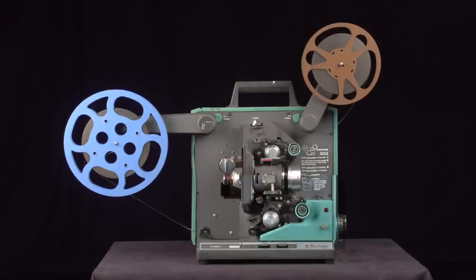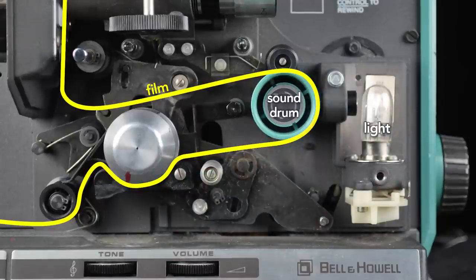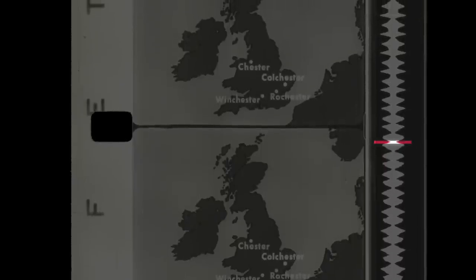Sound in movies is recorded optically on the edge of the film. After the film runs past the lamp, it runs across the sound drum. To read this optical soundtrack, light shines through a tube with a slit. This concentrates the light on a small section of the film's soundtrack.